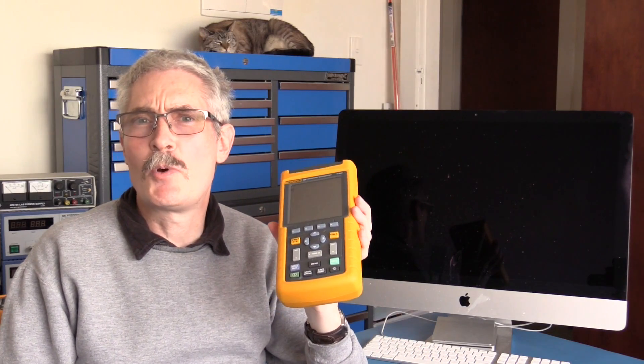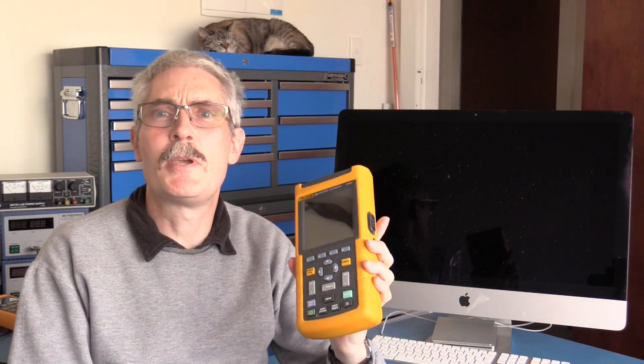Welcome to my channel Black Sheep Logic. Today we're going to take a look at this Fluke 125 scope meter. This is a two channel, 40 megahertz, 50 mega samples per second scope meter that is packed with a lot of functionality for troubleshooting.